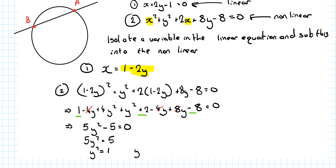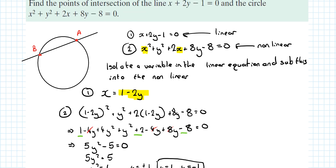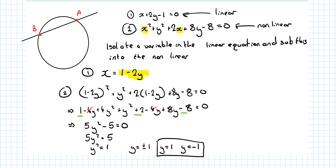5y² = 5, so y² = 1, y = ±1. So y = 1 or y = −1. We must have two answers because we're looking for two points, A and B. I've found the y-coordinates but I also need the x-coordinates.